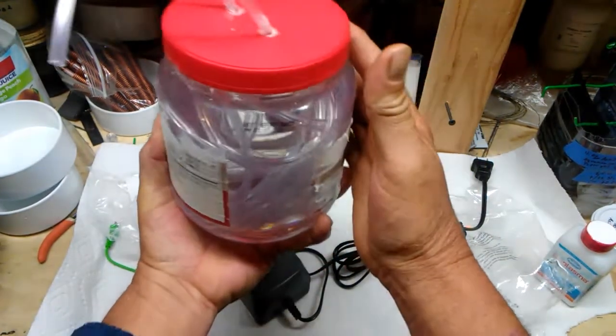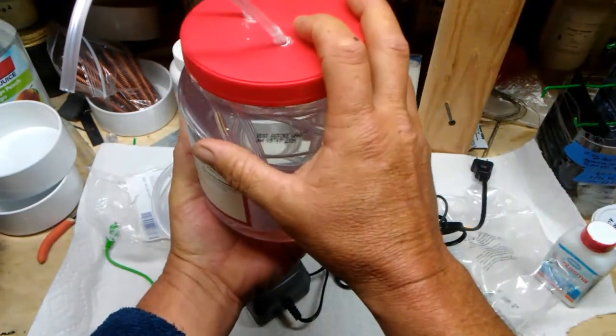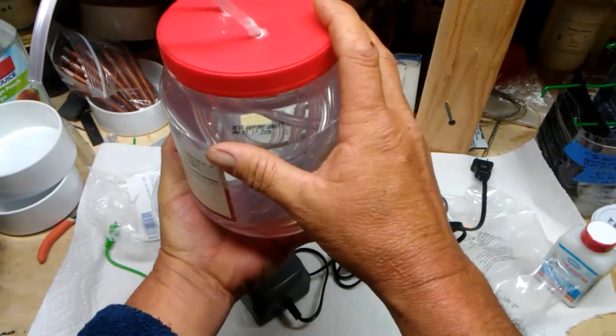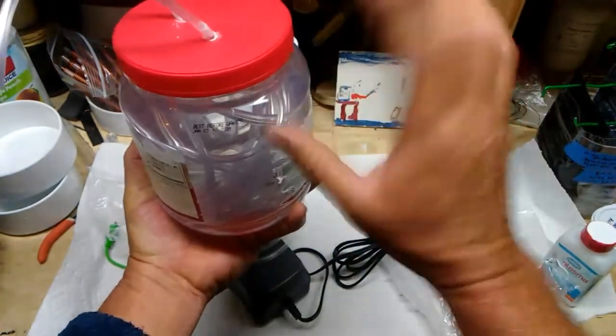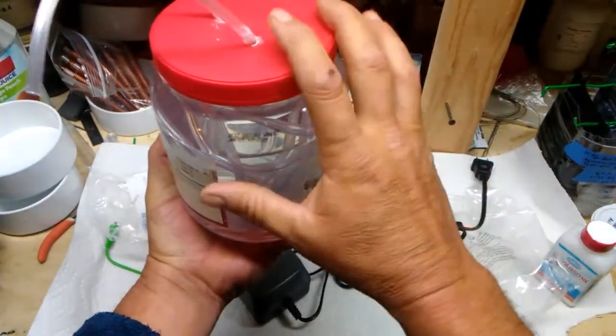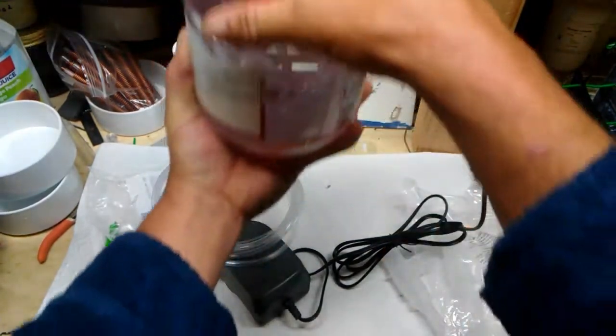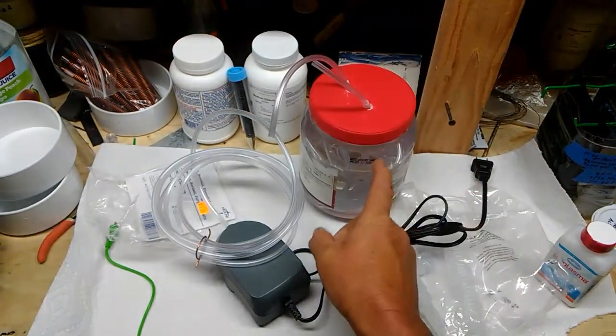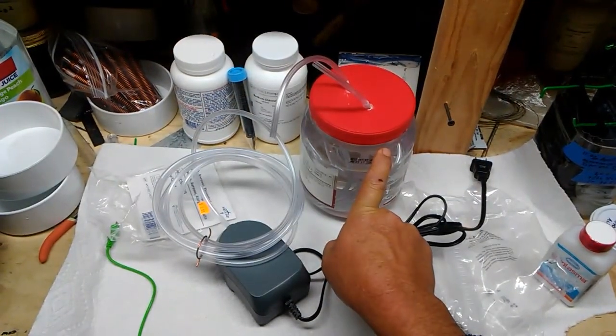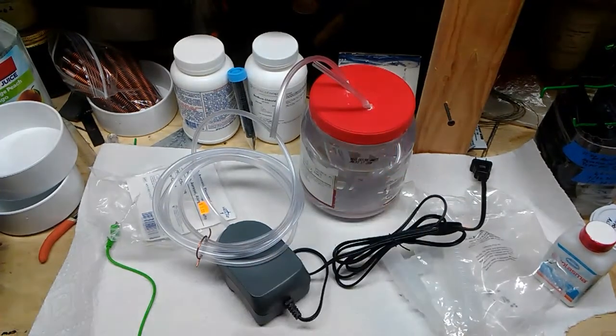Then I drained my caustic out and I rinsed it with distilled water. I rinsed it three times, filling it with water, shaking it, rinsing it out, filling it with water, shaking it, rinsing it out. Now you've nano-coated the inside of the jug and the outside of the tubing.